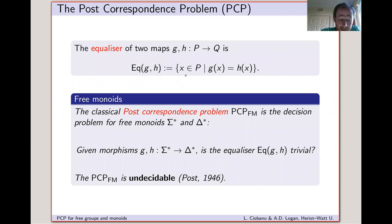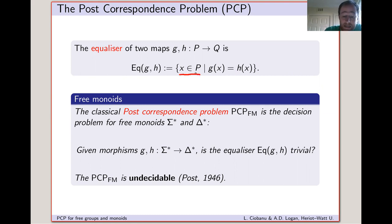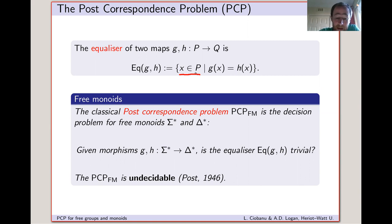The equalizer of two maps G and H going from P to Q is the set of points where they agree — all elements X contained in P such that G of X equals H of X. In practice, we'll take P and Q to be either free groups or free monoids, and G and H to be free group morphisms or free monoid morphisms as appropriate.